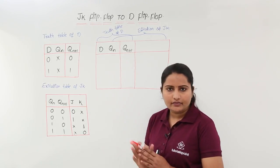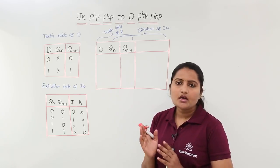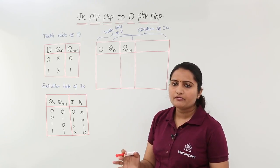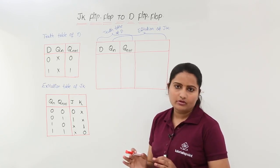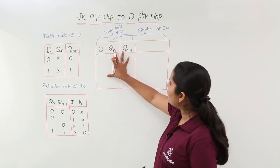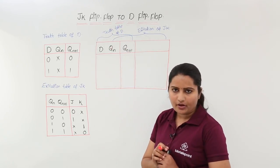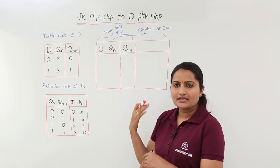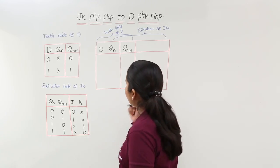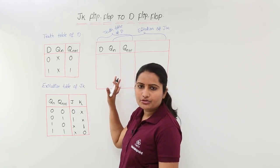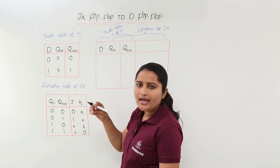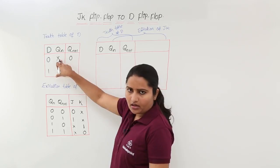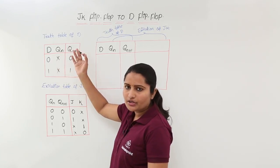To perform the conversion from JK to D flip-flop, we build a conversion table. First we take the truth table of the destination flip-flop, which is the D flip-flop. I am taking an extended truth table — whenever there is a don't care, I write both 0 and 1.